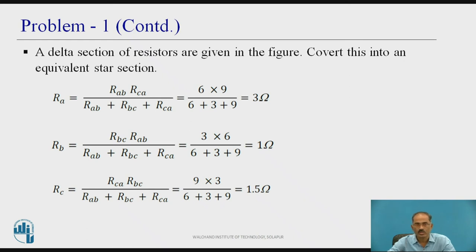Similarly, RB = (RBC × RAB) / (RAB + RBC + RCA) = (3 × 6) / (6 + 3 + 9) = 18 / 18 = 1 ohm. RC = (RCA × RBC) / (RAB + RBC + RCA) = (9 × 3) / (6 + 3 + 9) = 27 / 18 = 1.5 ohm.